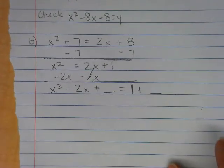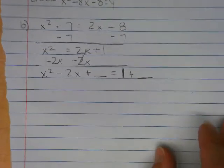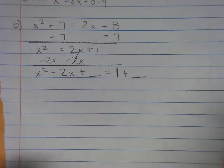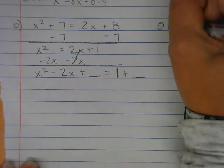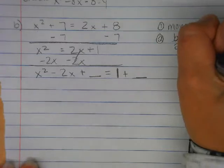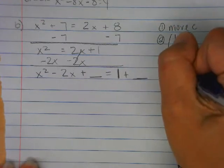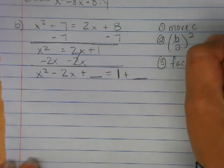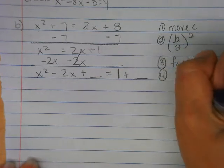Do you want to try it or do you want me to do it with you? You're going to try it. Try it with your table. We've already done step 1 of move C. Step 2, remember, is B divided by 2 quantity squared. And then you can factor and solve.